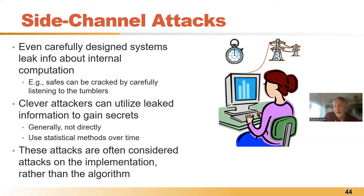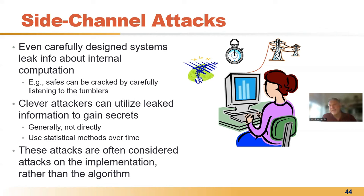As a program runs, the behavior of the software will often change what code runs, and that code could take different amounts of time. So if those behavioral changes are based on secrets inside the program, we can use the timing of the program to infer information about what's happening inside. As electronics operate, they emanate electromagnetic radiation from their circuits, and this is actually a rich source of information about what the internal chip is actually doing.